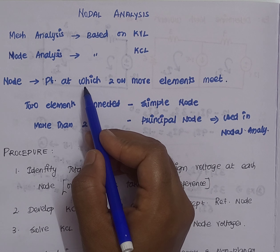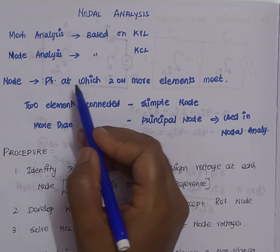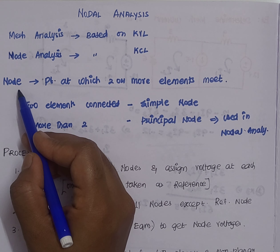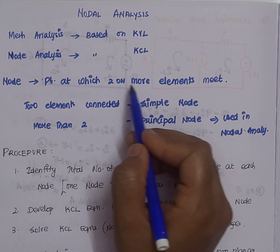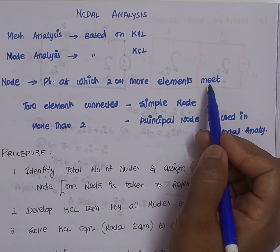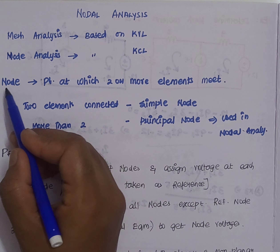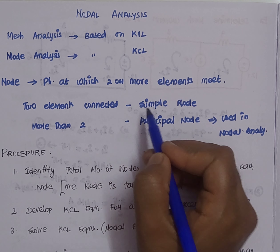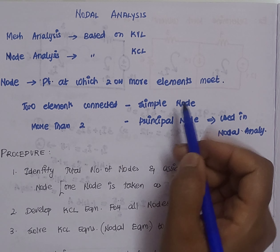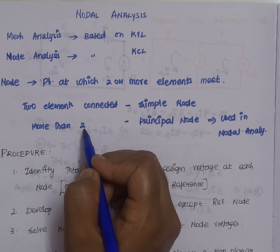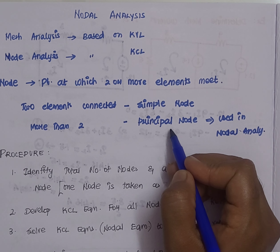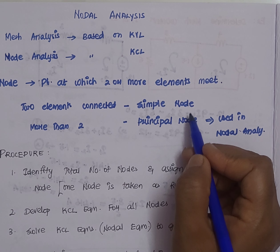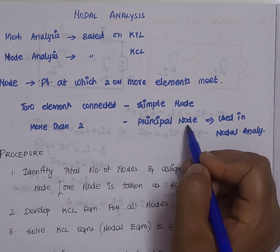Now let us see the procedure for nodal analysis, before which we have to know what is called a node. A node is a point at which two or more elements meet together. When two elements are connected it is called a simple node, whereas when more than two elements are connected it is called a principal node, and this principal node concept will be used in our nodal analysis procedure.